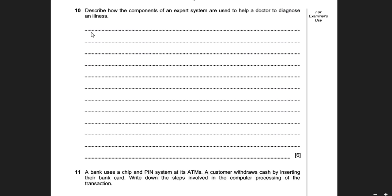For the six-mark question, we need to think about what the actual components are. We have the interface for the non-expert end users to enter their queries, and we have the inference engine which is going to query the knowledge base. The knowledge base is made up of facts and rules, and all of this is going to be outputted somehow. Now we want to put this into context. If the question is about a doctor diagnosing illness, the interactive screen can't be blank — it must be asking questions, specifically asking for what are the symptoms.